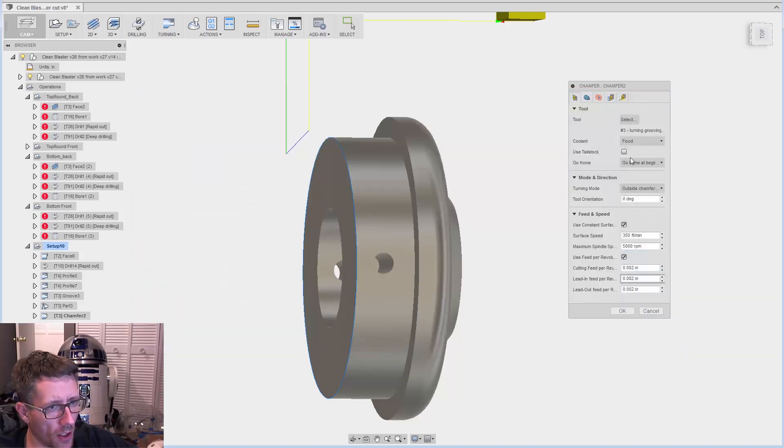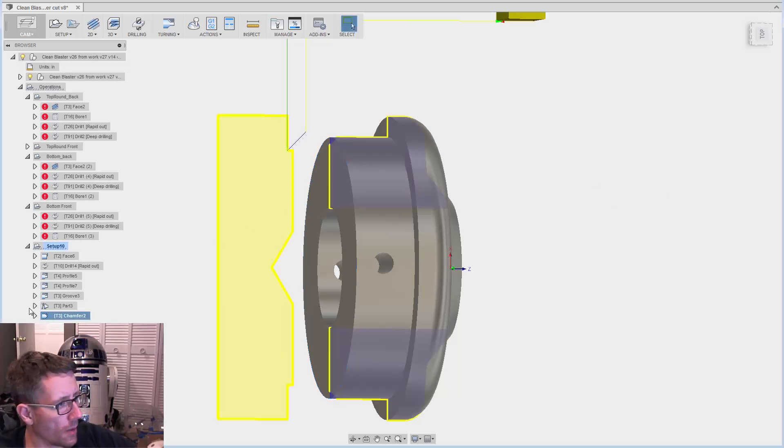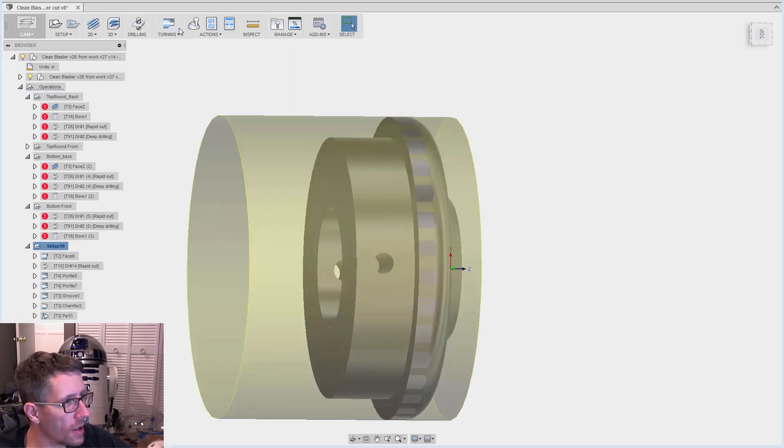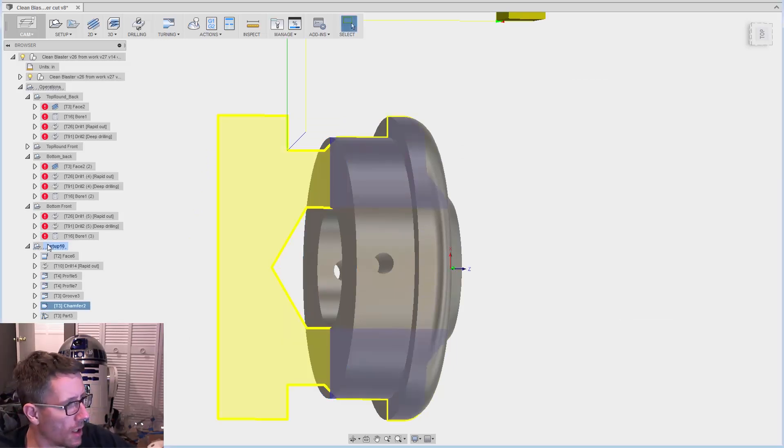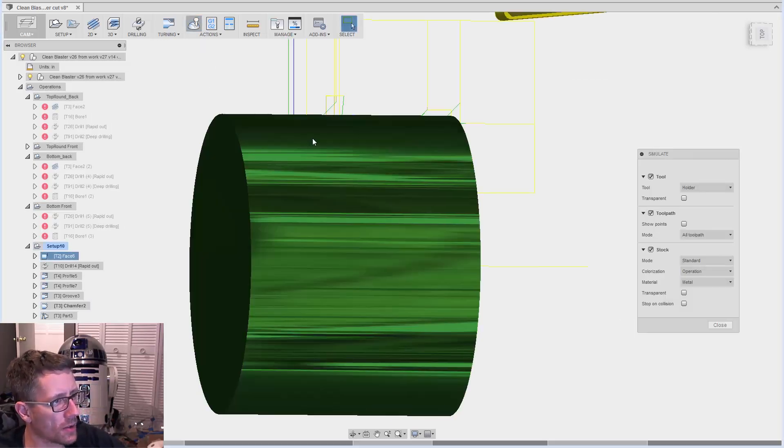Select our tool. We want a groove tool again. Let's try a 3-2. I've got to move that above the part. Set the feeds and speeds again.